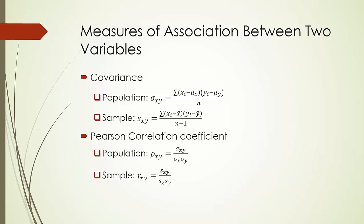Now let's discuss two measures of association between two variables x and y: covariance and Pearson correlation coefficient. The formulas are listed here, and we consider both population and sample. Both measures provide a quantitative description of linear association between variables x and y. If the covariance between x and y is positive, it indicates a positive linear association — when x tends to be greater than its mean, y also tends to be greater than its mean. Or simply, when x increases, y also increases. Similarly, a negative covariance indicates a negative linear association between x and y.